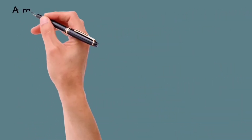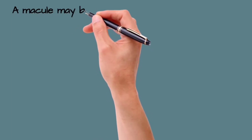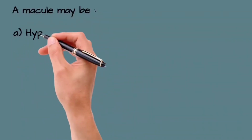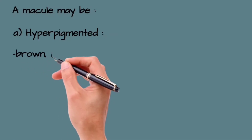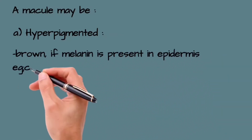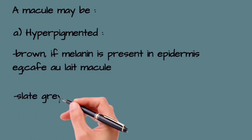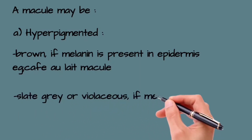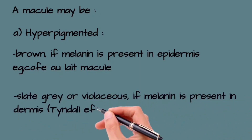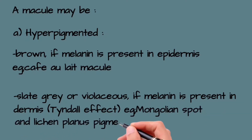A macule may be hyperpigmented, hypopigmented, or erythematous. Hyperpigmented macules may be brown if melanin is present in the epidermis — for example, cafe au lait macule — or slate gray or violaceous if melanin is present in the dermis, for example Mongolian spot and lichen planus pigmentosus.